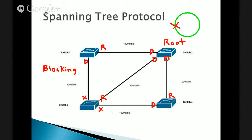All of the other switches in the environment, once we've identified who the root is, are going to identify their root port — which port faces the root with the lowest cost. This is one of the reasons why when you plug into a switch, you have to wait half a minute before you can actually transmit data, because it's going through this spanning tree process. The ports facing away from the root become designated ports. Every port on the root becomes a designated port. Those ports that become root ports or designated ports go into a forwarding state, but all ports start out in a blocking state. If you aren't a designated port and you aren't a root port, you stay in that blocking state.